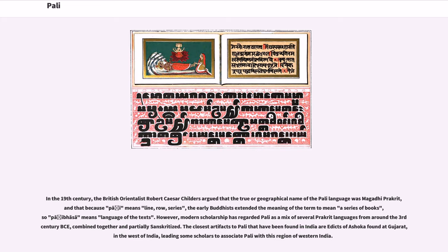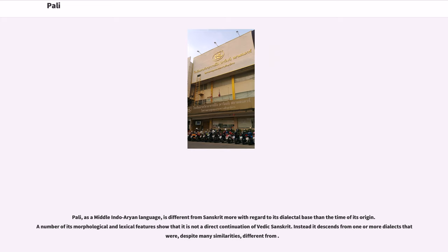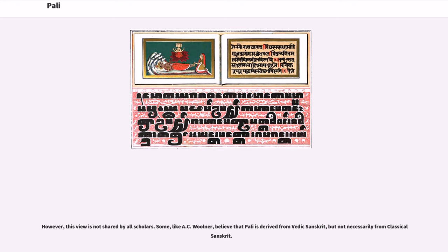The closest artifacts to Pali found in India are edicts of Ashoka found at Gujarat in the west of India, leading some scholars to associate Pali with this region of Western India. There is persistent confusion as to the relation of Pali to the vernacular spoken in the ancient kingdom of Magadha, located around modern-day Bihar. Pali, as a Middle Indo-Aryan language, is different from Sanskrit more with regard to its dialectal base than the time of its origin. A number of its morphological and lexical features show that it is not a direct continuation of Vedic Sanskrit, but instead descends from one or more dialects that were, despite many similarities, different languages.